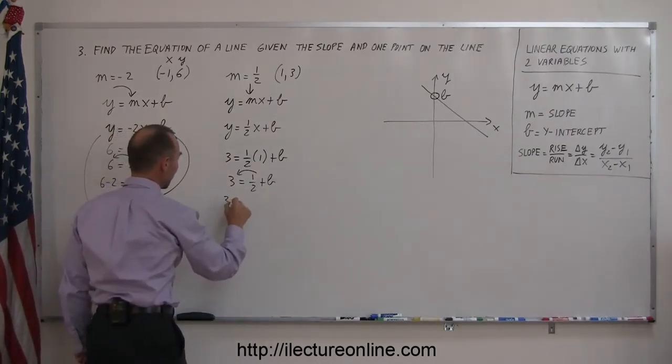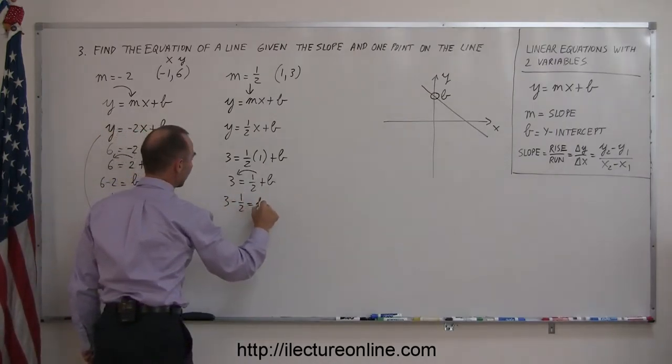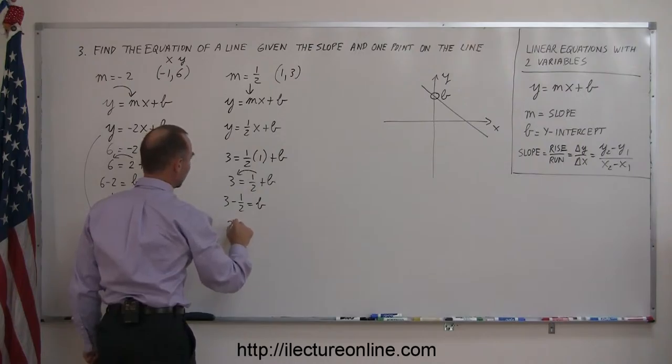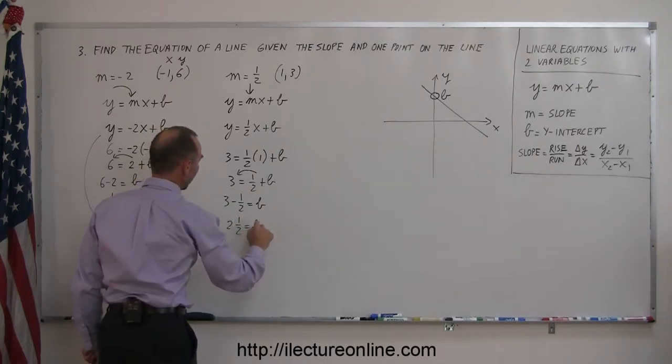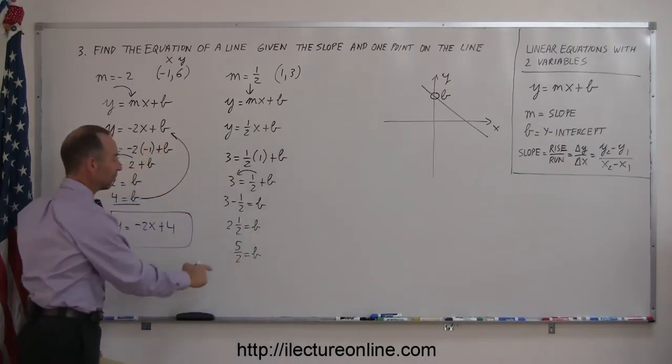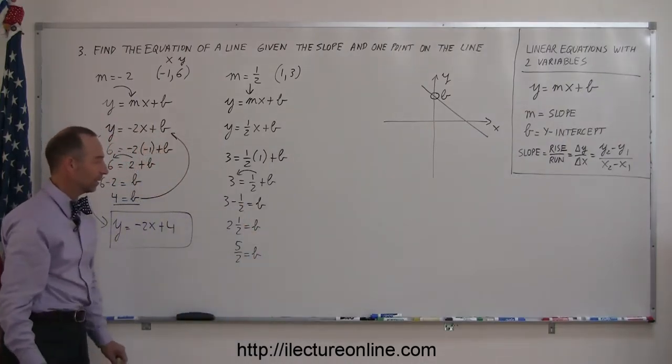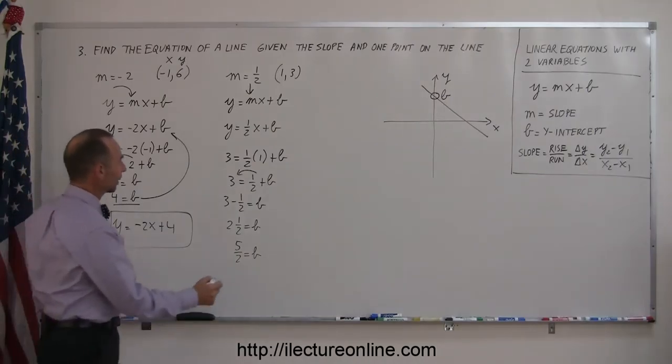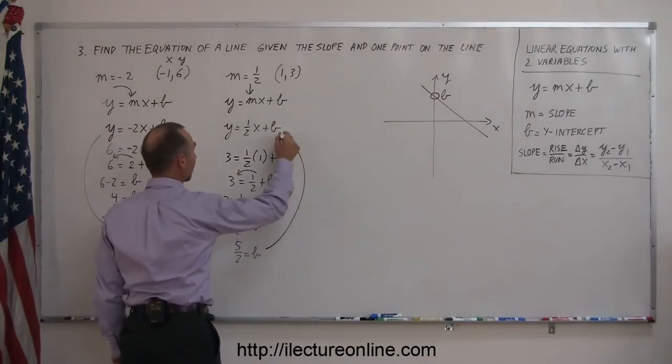So now we have 3 minus 1 half equals b, or that's 2 and a half equals b, or 5 halves equals b, you can write in either form as an improper fraction or a mixed number, doesn't matter.